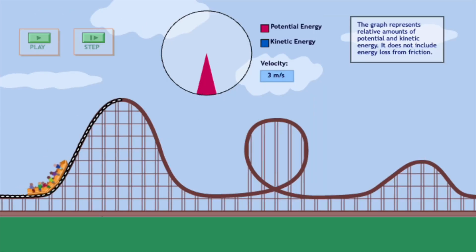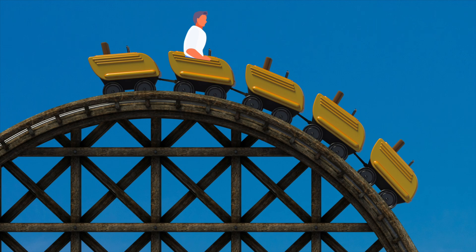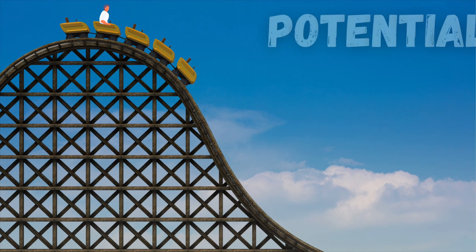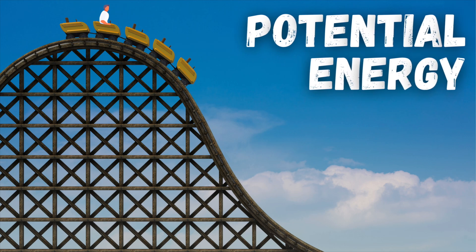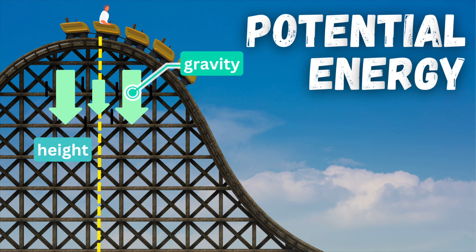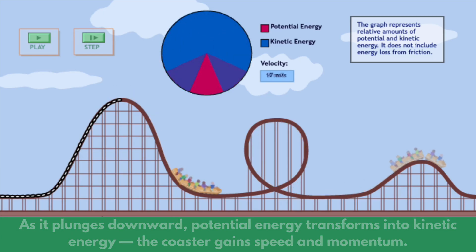Imagine a roller coaster slowly climbing to the top of the track. At that moment when it's at its highest point and not moving, most of its energy is potential energy - it has height and gravity is ready to pull it down. Then as it plunges downward that potential energy begins to change. The coaster picks up speed and that stored energy becomes kinetic energy, the energy of motion.